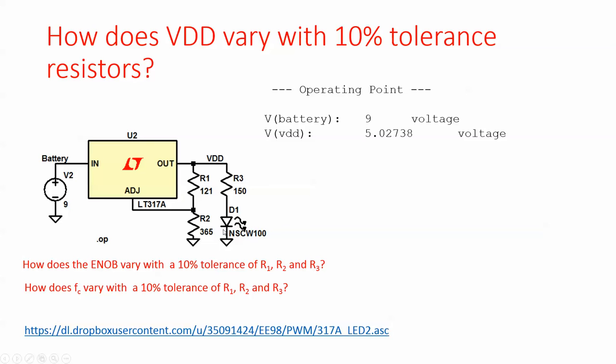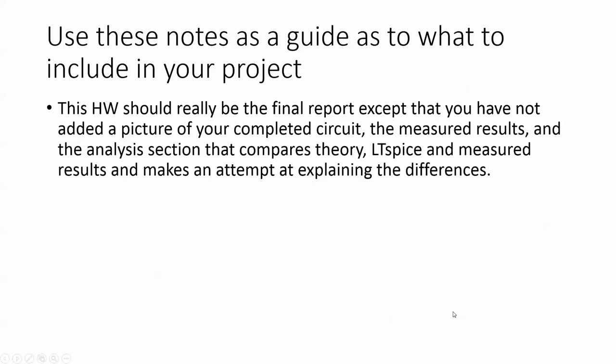Other things that you need to do is how does the effective number of bits vary with 10% tolerance? How does the cutoff frequency vary with these? Use these notes as a guide as to what to include in your project. This homework really should be your final report except you just haven't added a picture of your fabricated circuit, the measured results, and the analysis section trying to explain the differences between hand calculations, LT spice, and measured results. I do have another video on the testing of the DAC that you can find in Canvas.